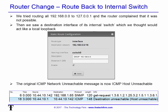Then we saw a destination interface option for the router's internal switch — even though it's a router, it also functions as a small switch and had an interface called 'switch.' We tried routing 192.168.0.0 traffic there. The original ICMP network unreachable message changed back to a host unreachable message, but now it's from the router rather than the ISP — so we're at least keeping it within our own network.